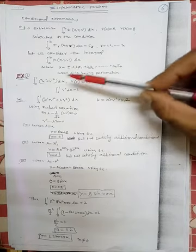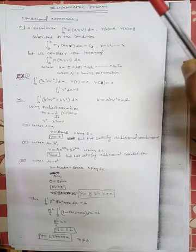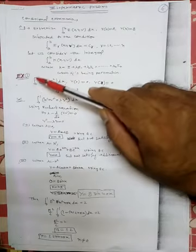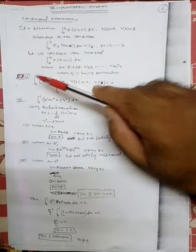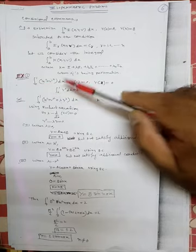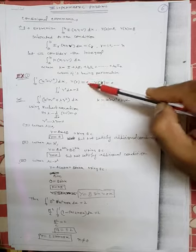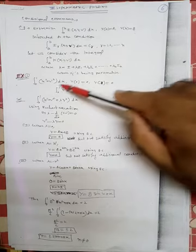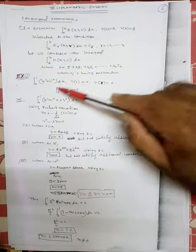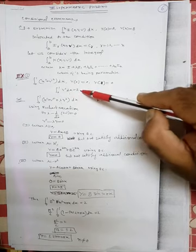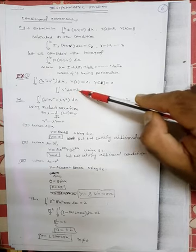Let us take Example 1: extremize the integral from 0 to 1 of (x² + y'²) dx, with boundary conditions y(0) = 0, y(1) = 0, and the additional condition: integral from 0 to 1 of y² dx = 2.